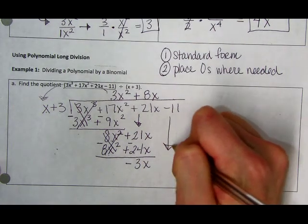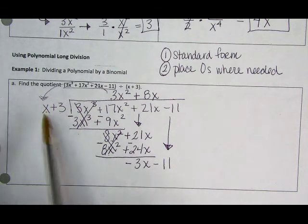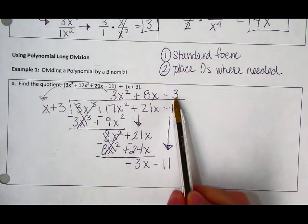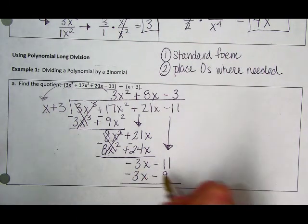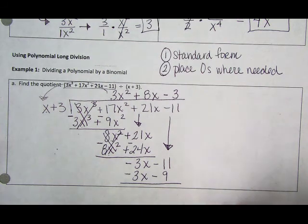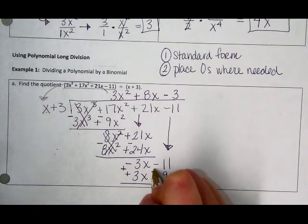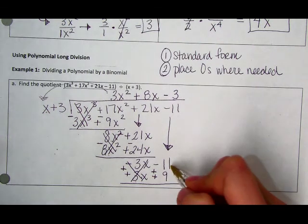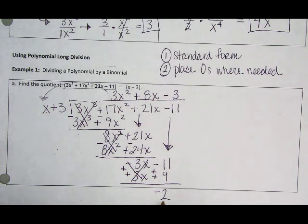21 minus 24 gives me a negative 3x. And I still have one more term to bring down, which is my minus 11. Going back through one more time, I have an x. I need a negative 3x. So what's missing here is a minus 3. So negative 3 times x gives me a negative 3x. Negative 3 times positive 3 gives me a negative 9. Subtract each of my terms. Just remember, when I subtract a negative, that means I turn it into a positive. So if I'm subtracting a negative, I can actually make both of these positive. Negative 3 plus a positive 3x, those cancel out. Negative 11 plus 9 gives me a negative 2. And I have no other terms to bring down. So since I have one term here on the inside, two terms on the outside, I know that this is going to be my remainder.